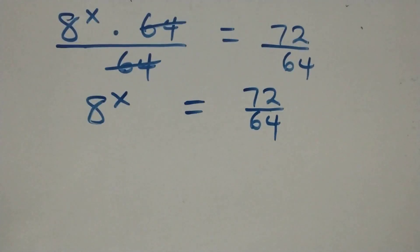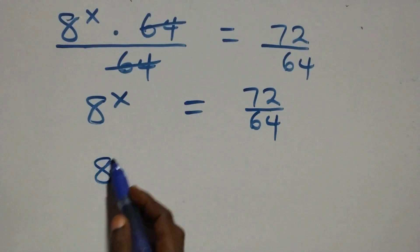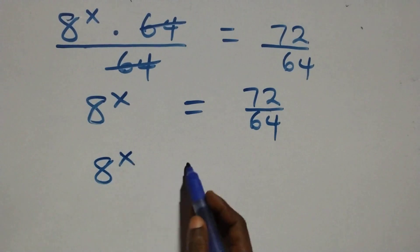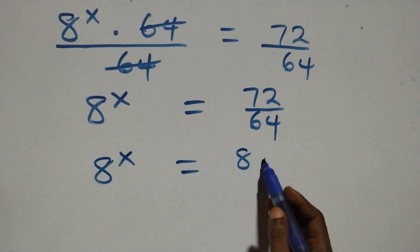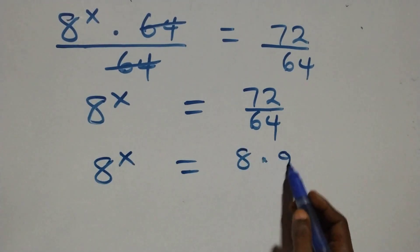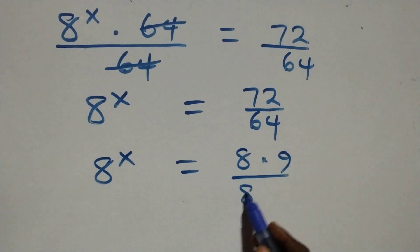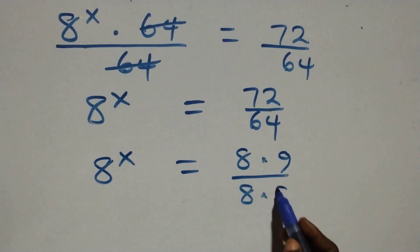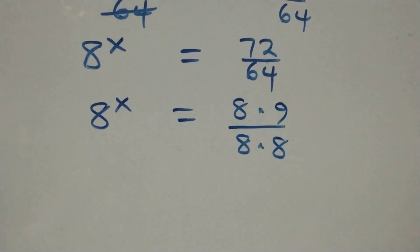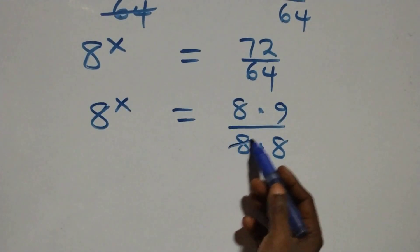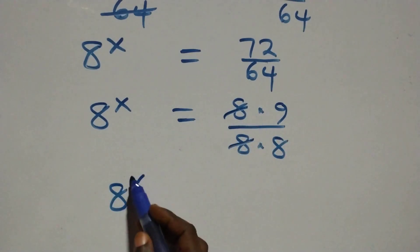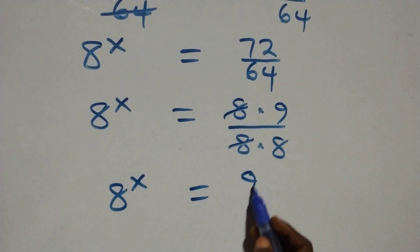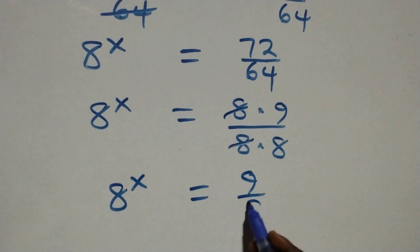At this next step, we can write this as 8 raised to power x equals 8 times 9 over 8 times 8. This implies the 8s cancel each other, and we have 8 raised to power x equals 9 over 8.